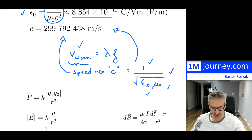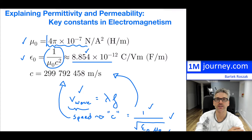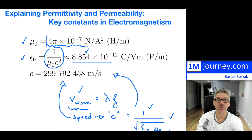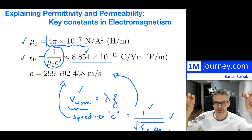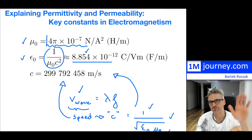So this is the introduction, and hopefully it gives you an understanding of what these permittivity and permeability constants are. They are constants of nature. The permittivity constant is related to the permissive way of forming electric fields, and the permeability one is related to magnetic fields and how easily they can form. Thanks for watching — we'll see you in a future video.